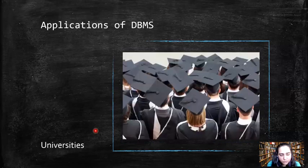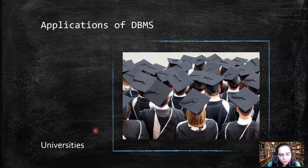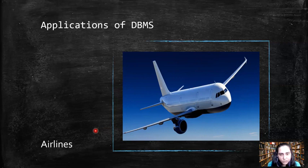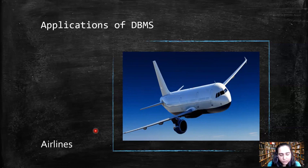Databases are also used within universities to store details about students like their grades, percentile, subjects they have studied, subjects they're going to study, and upcoming exams. Then in airlines, databases are used for bookings, reservations, finding available flights, schedules, and routes. An interesting fact is that airlines were the first to start using a geographically distributed database.